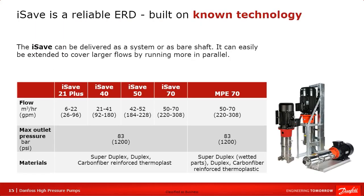Besides the pumps, we also have the iSave ERDs — energy recovery devices. They are built on the isobaric pressure exchanger concept. The iSaves come in different sizes, just like the pumps: the iSave 21 is the smallest, covering 6 to 22 cubic meters, all the way up to the iSave 70. We also have the MPE 70, which is a pressure exchanger concept used more in bigger RO systems.